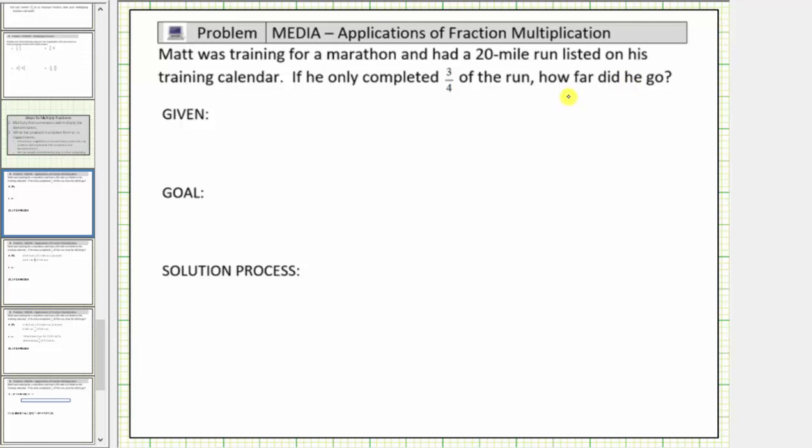We will answer this question using a formal problem-solving process. For step one, we state the given information. The given information is Matt had a 20-mile run planned and also he ran three-fourths of the run.